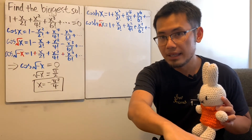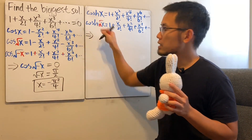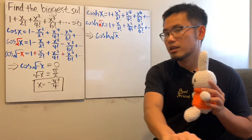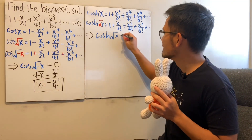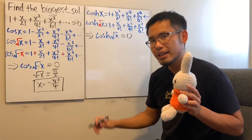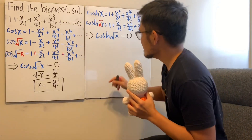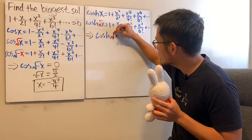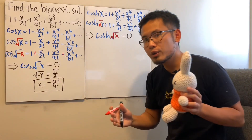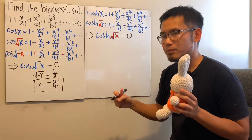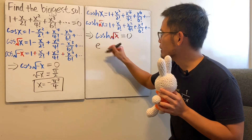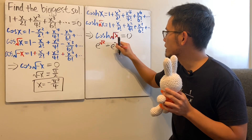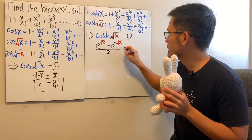That means our original equation becomes cosh of square root of x equal to 0. So we have to solve cosh of square root of x equal to 0. Using the exponential definition of cosh, this gives us e to the square root of x plus e to the negative square root of x, divided by 2, equal to 0. This is weird — both exponential terms are always positive, so how can their sum be zero? Let's multiply both sides by 2 and bring one term to the other side: e to the square root of x equals negative e to the negative square root of x.